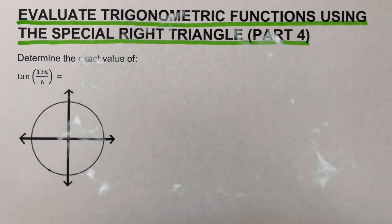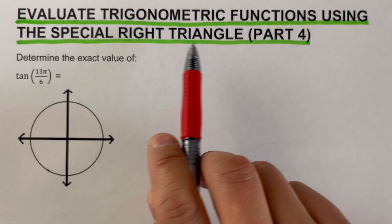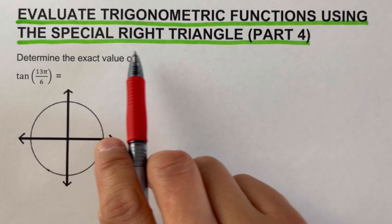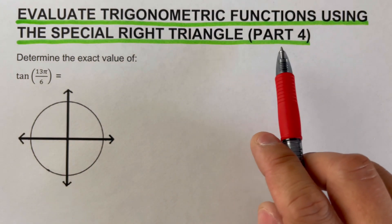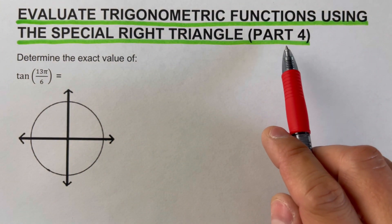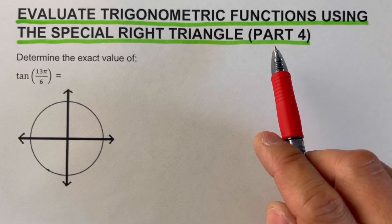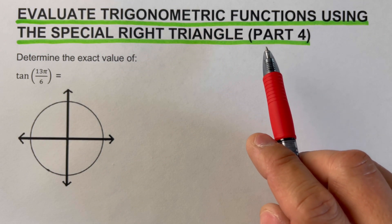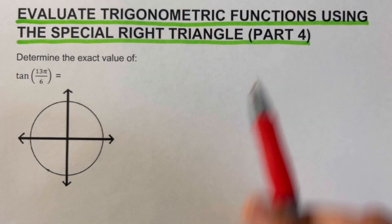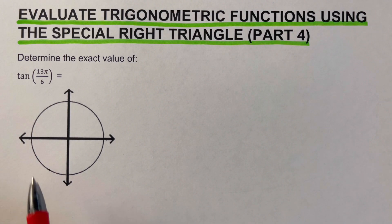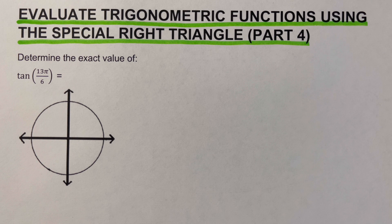Hello everyone. In this video we are going to evaluate trigonometric functions using the special right triangle. This is the fourth part. In this part, the given angle is more than 360 degrees and at the same time in radian. Before we go over this example, let's have a review on the special right triangle and the formulas to find the reference angles.